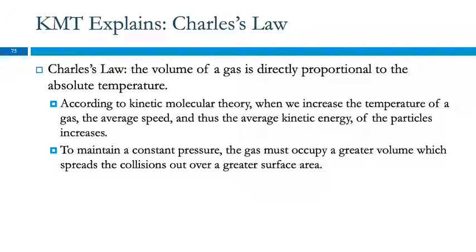Charles' law says the volume is directly proportional to the absolute temperature. If we increase the temperature of the gas, the average speed of the particles increases. For Charles' law, we maintain constant pressure. If the particles are moving faster, they'll hit the container more frequently and each collision will be harder, which would cause pressure to go up. To maintain constant pressure, the gas must occupy a larger volume. So increasing temperature at constant pressure increases volume.